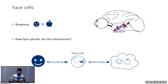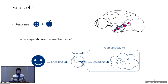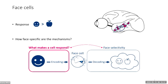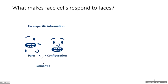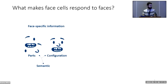This question can refer to what a face cell encodes about a stimulus, but it can also refer to how that information can be used downstream. I think ultimately face selectivity is a statement about what is decodable, but face selectivity is also the result of what makes a face cell respond — and that's the part of the question I'm going to talk about today. Most previous studies and models have focused on face-specific information such as face parts, their configuration, and even semantic information.